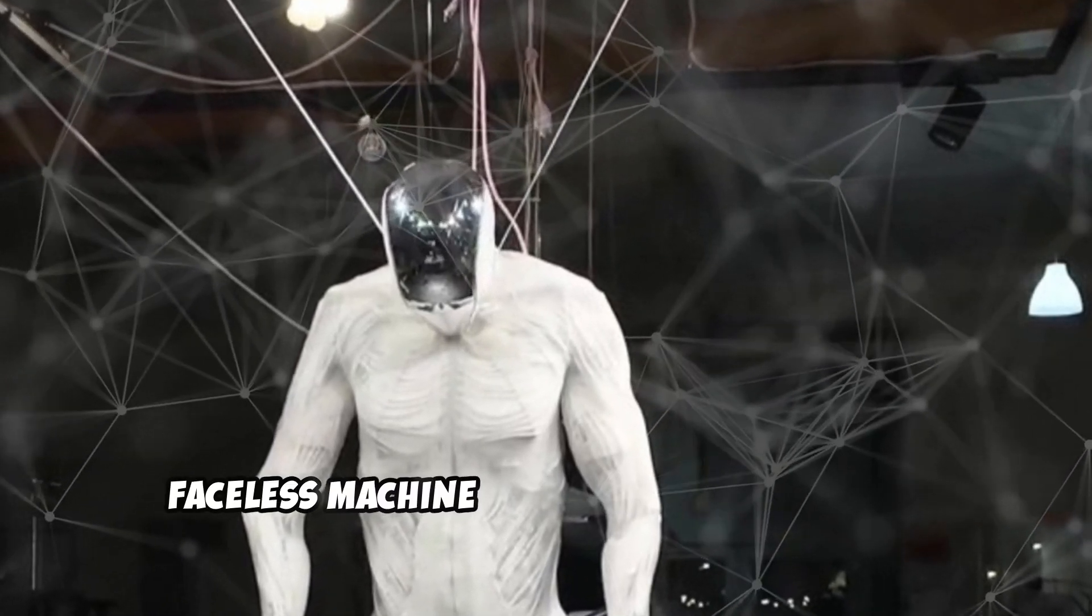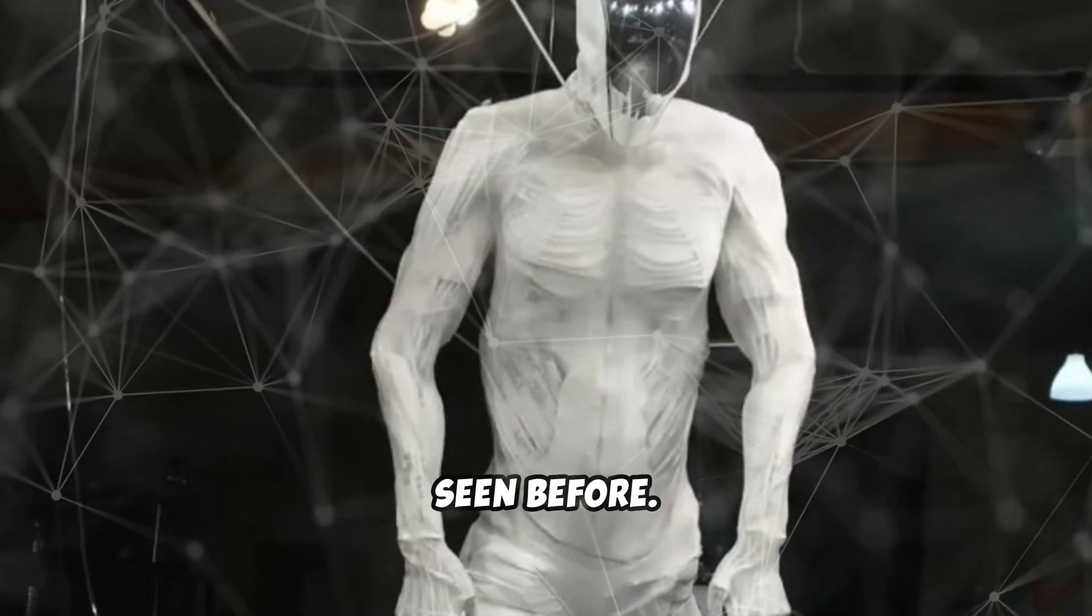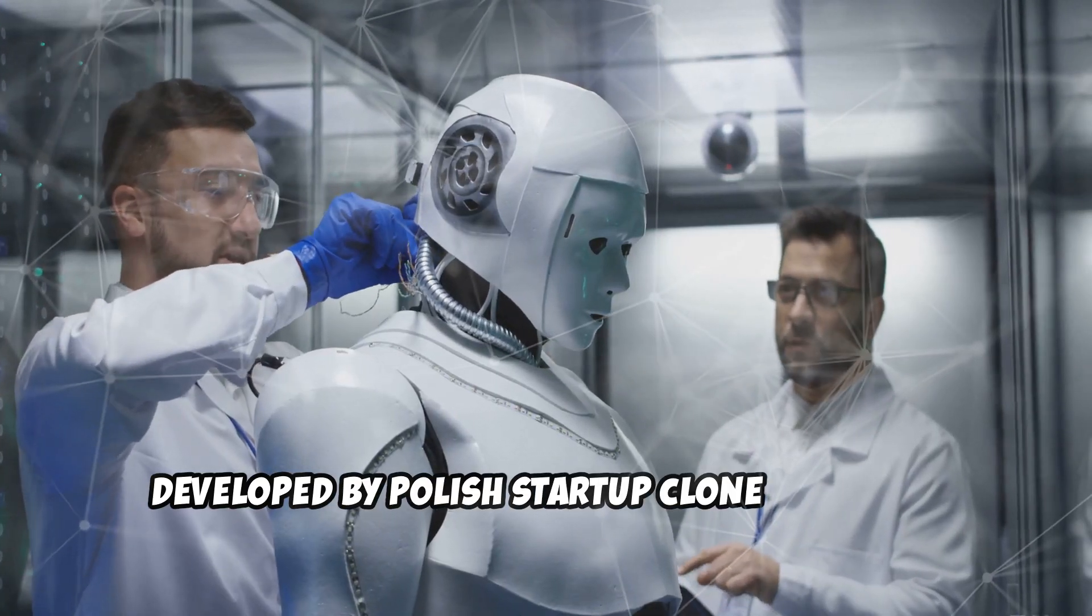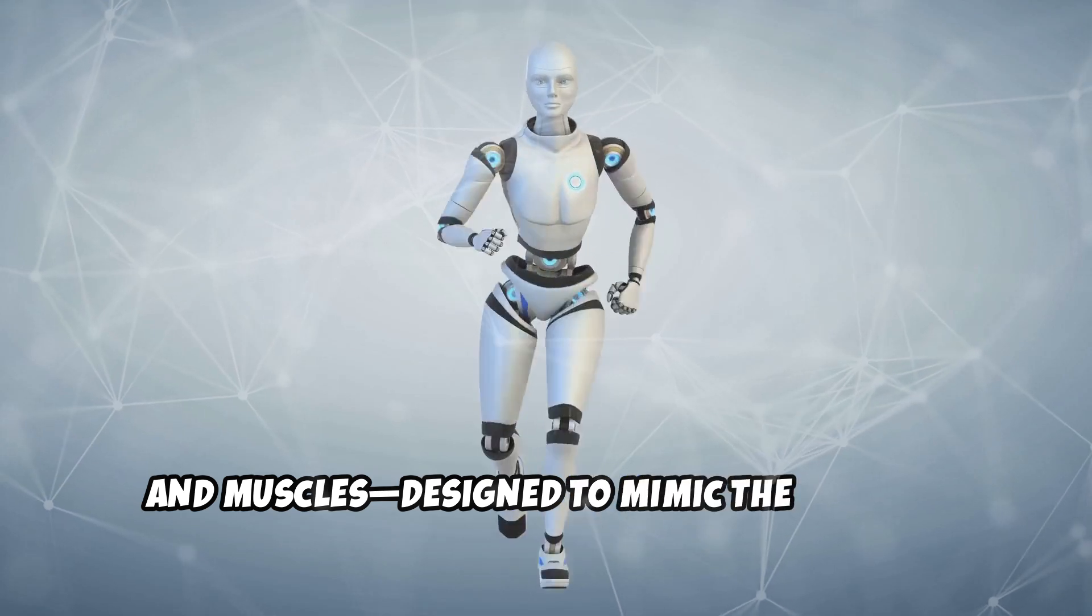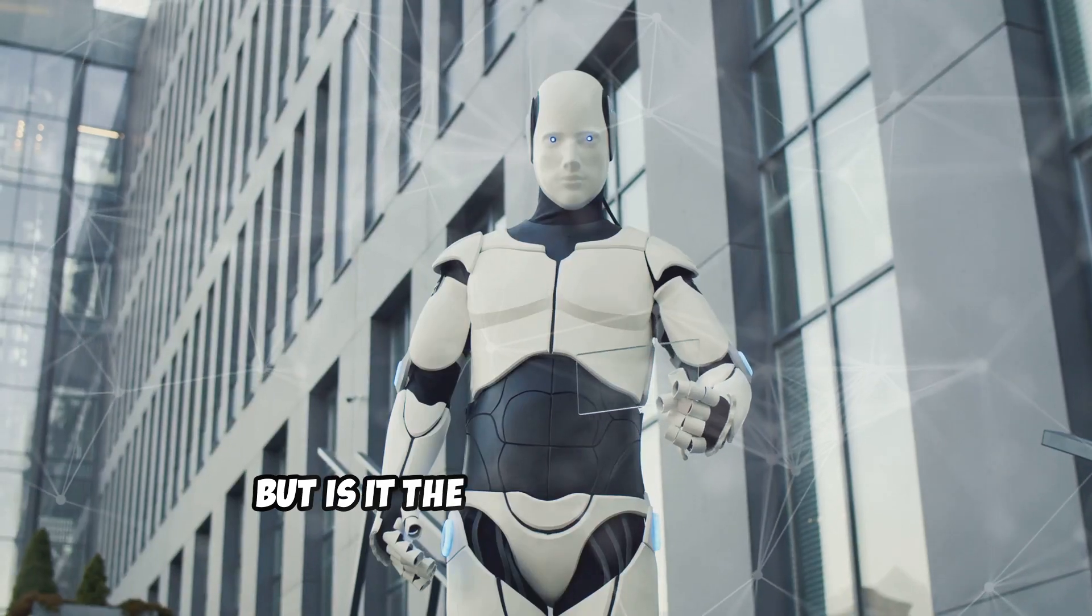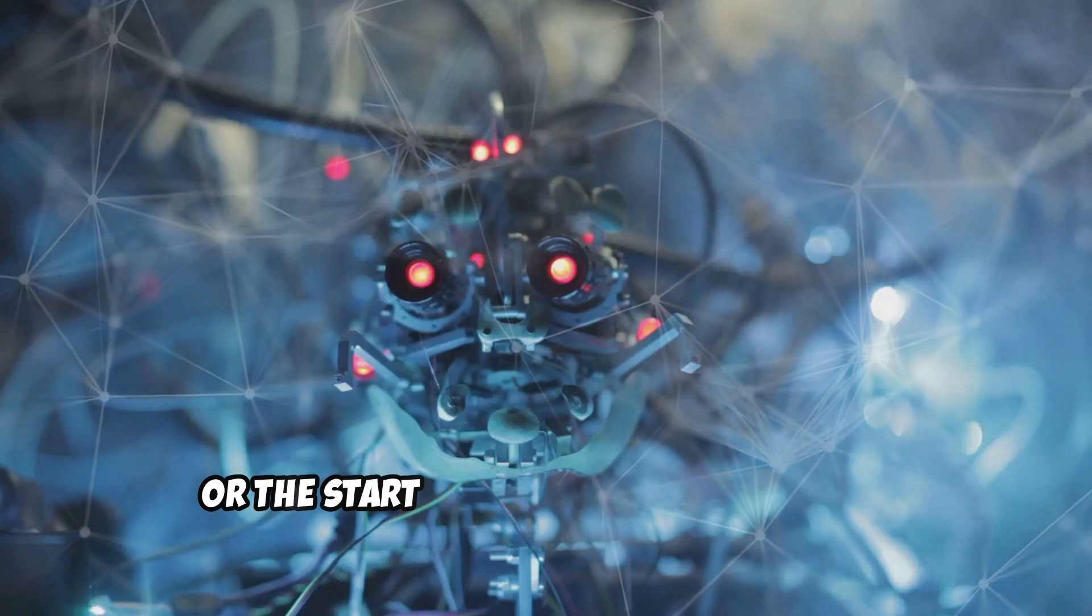This six-foot faceless machine is unlike anything we've seen before. Developed by Polish startup Clone Robotics, Protoclone has artificial bones, tendons, and muscles designed to mimic the natural human gait. But is it the future of robotics, or the start of something terrifying?